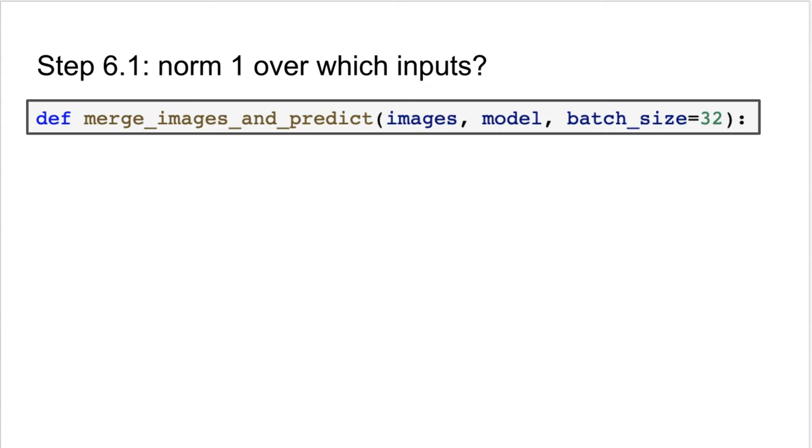Well, first we need to define the image that the gradient of which we will take the norm of will be derived with respect to. It turns out that a good input for this purpose is a linear combination of real and fake images.